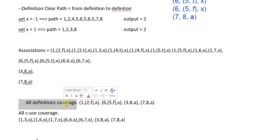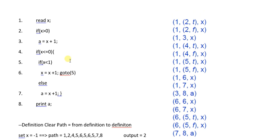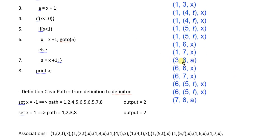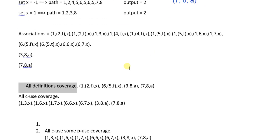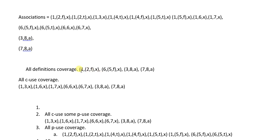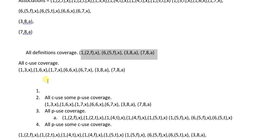Now we analyze the code using different coverage assumptions. All-definition coverage is where we look at all the definitions and find the first usage of each definition. For every definition we choose just one use — either computation use or predicate use. We have four definitions: at line one, line three, line six, and line seven. We take one use for each definition — this is all-definition coverage.